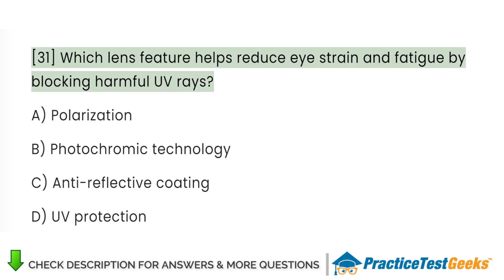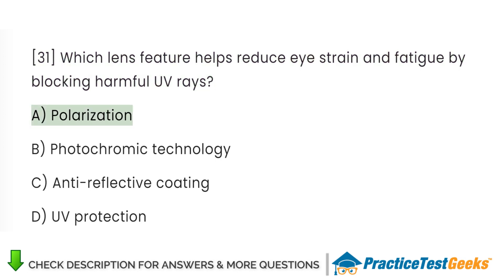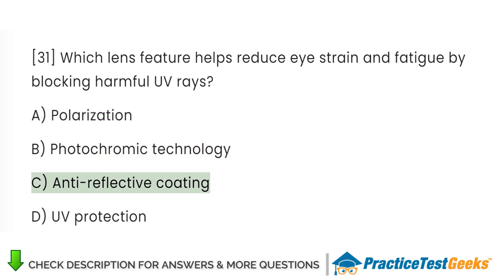Which lens feature helps reduce eye strain and fatigue by blocking harmful UV rays? A. Polarization. B. Photochromic technology. C. Anti-reflective coating. D. UV protection.